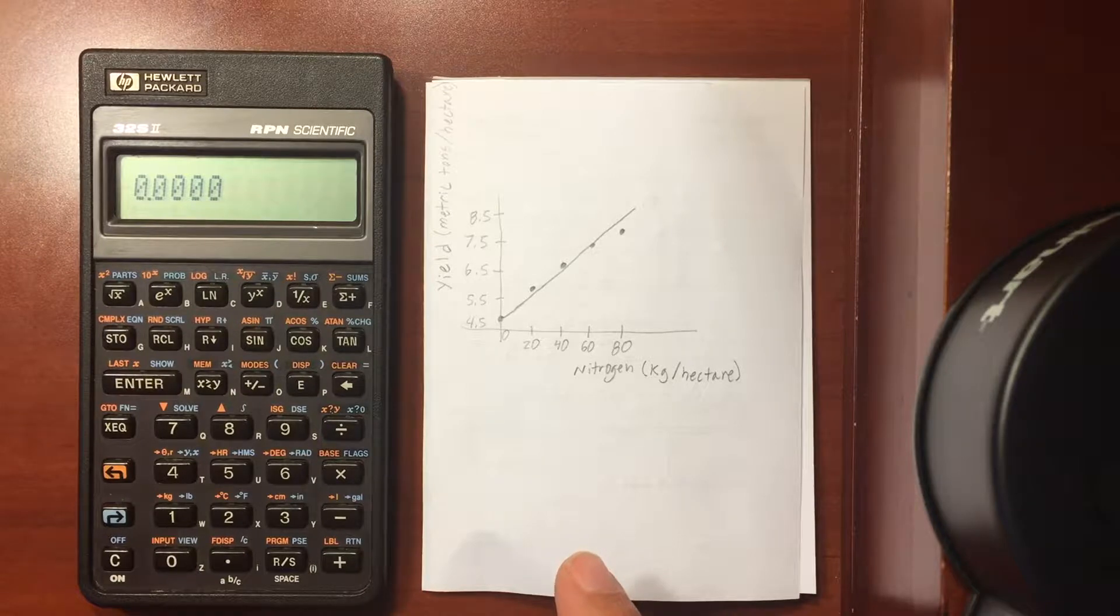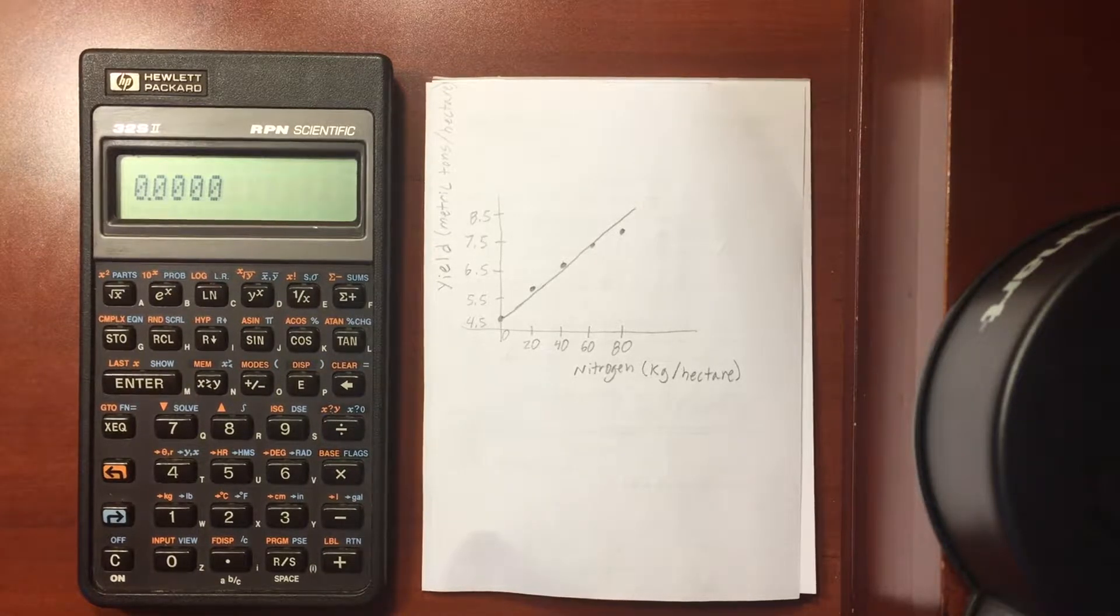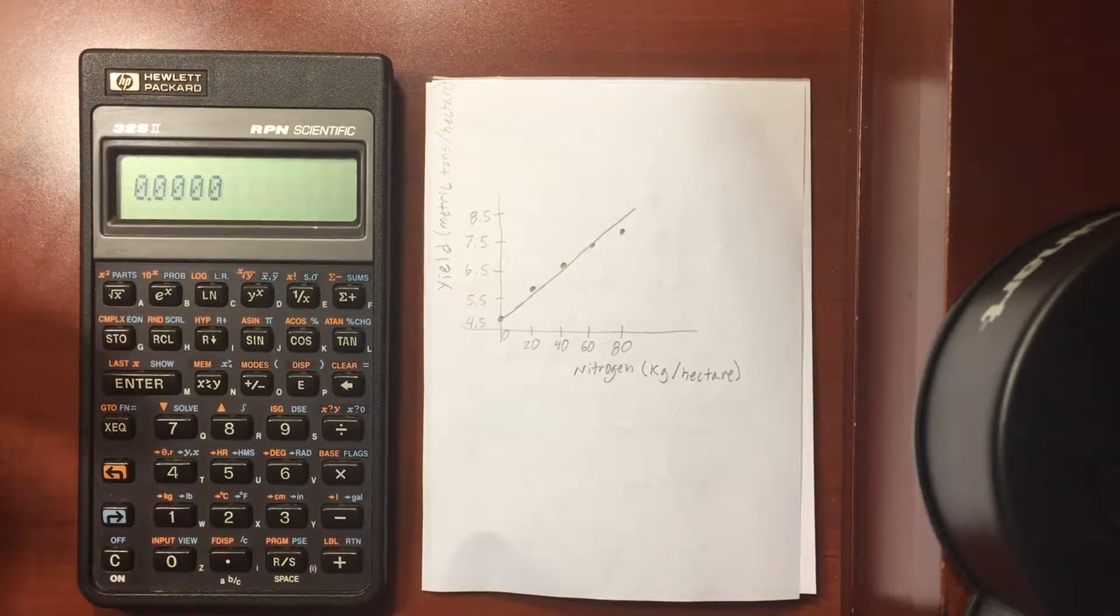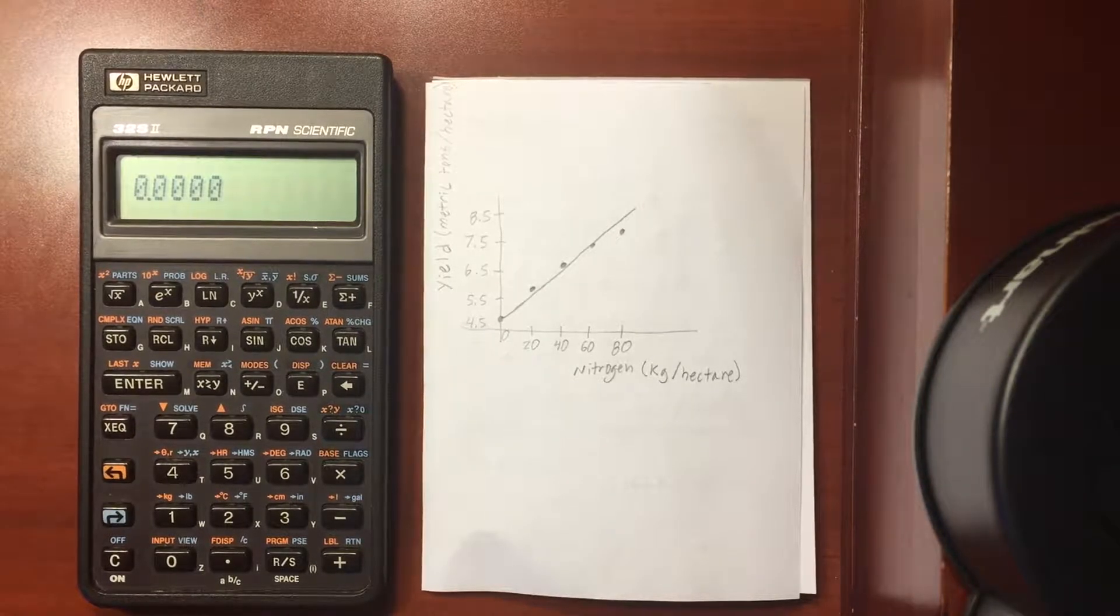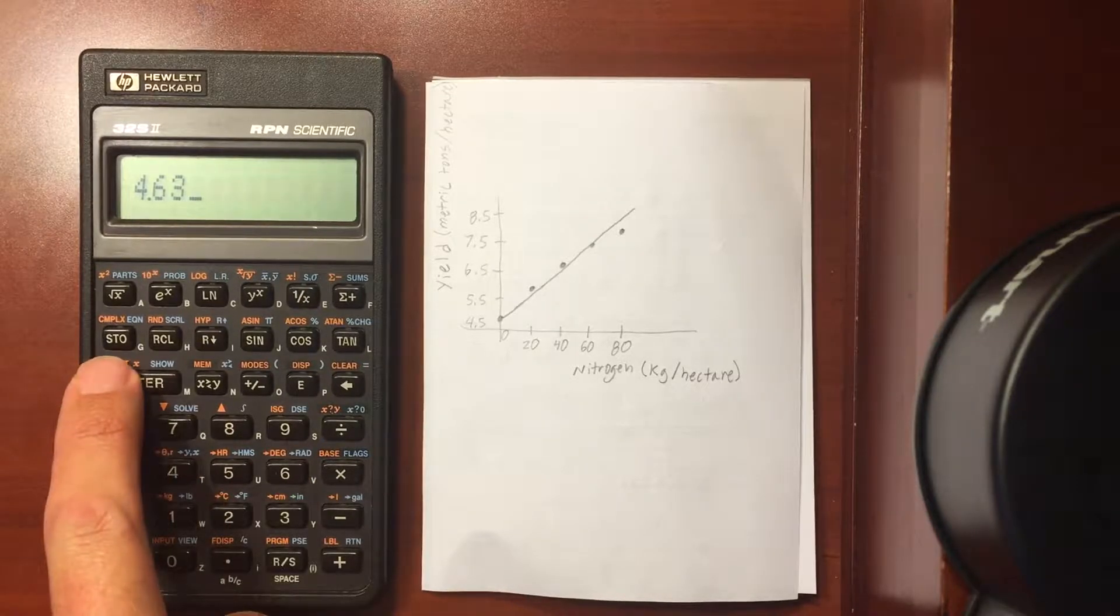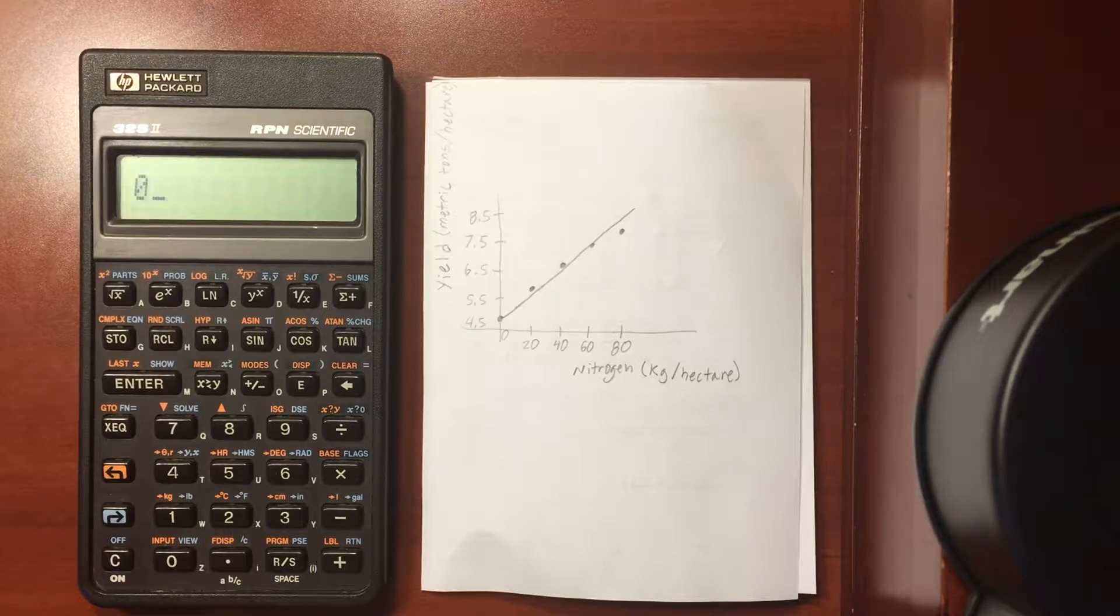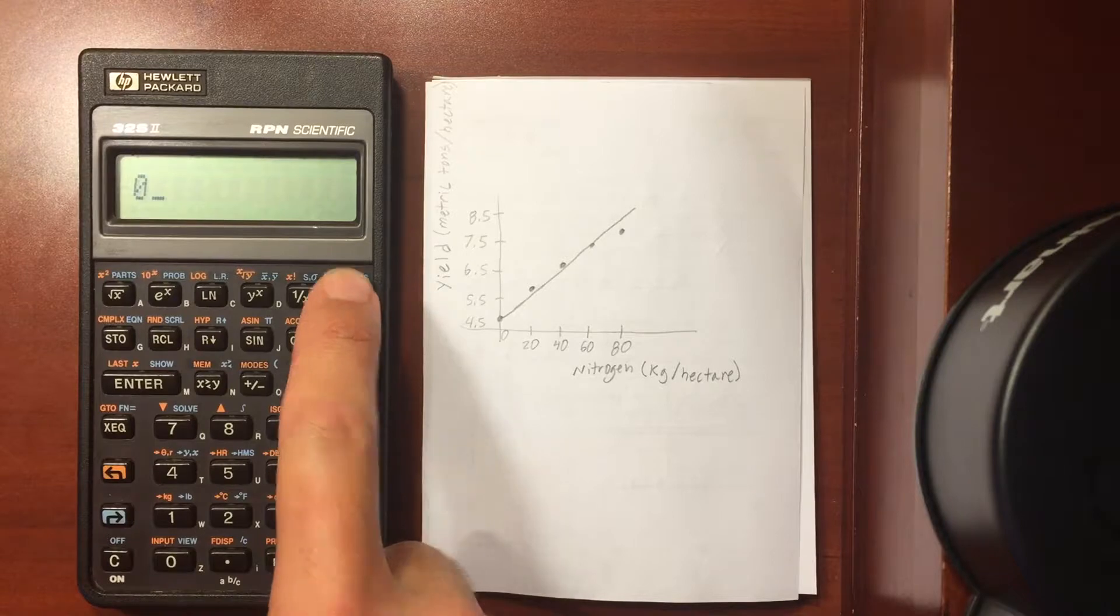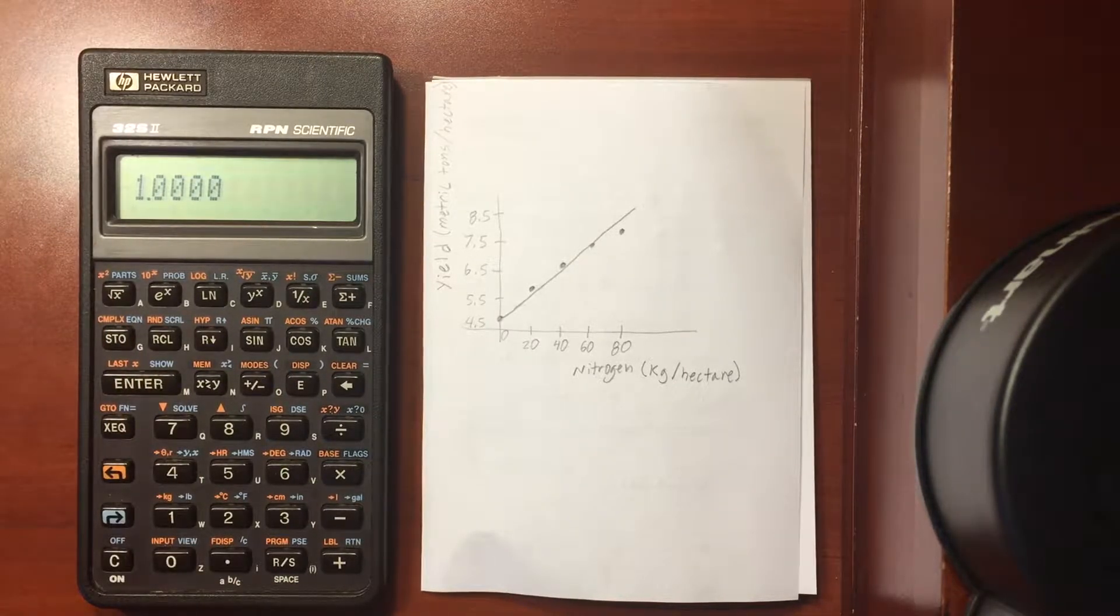Now I'm going to enter in these numbers as the y value first and then the x value, which makes sense because as I enter in the x value, the first number that I enter will be pushed up into the y portion of the stack. So the first value is going to be 4.63 and that is paired with an x value of 0. Now to put it into my summation register just hit this sum plus and this tells me I have one value in my summation register.